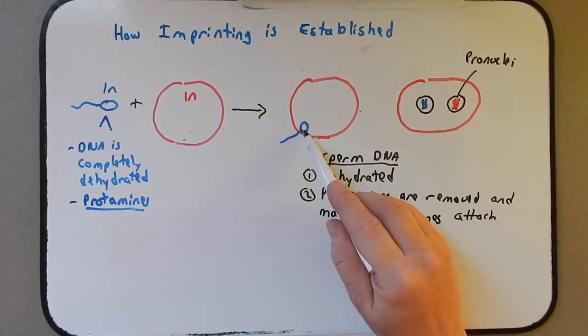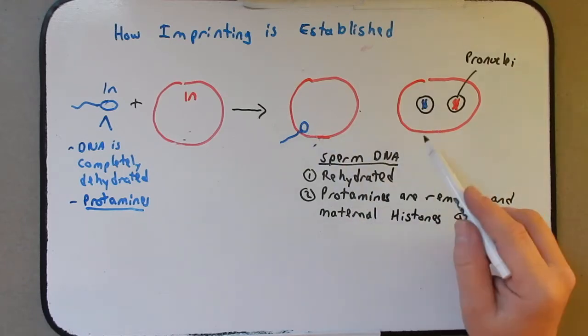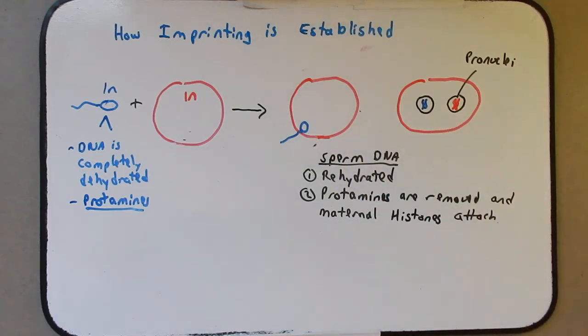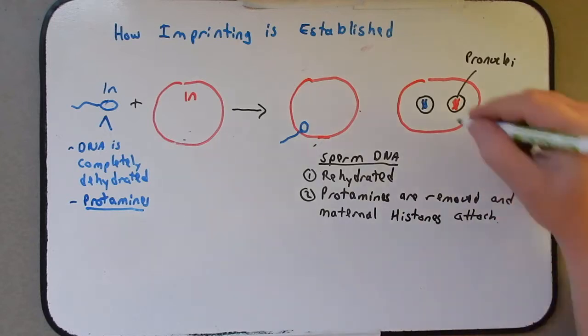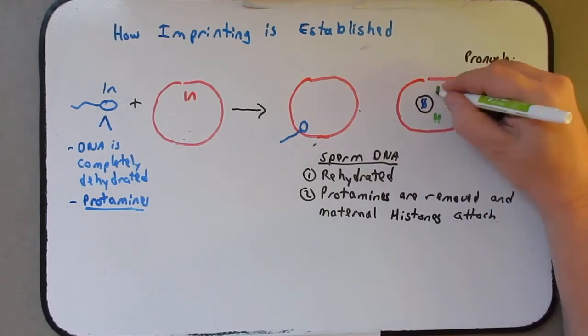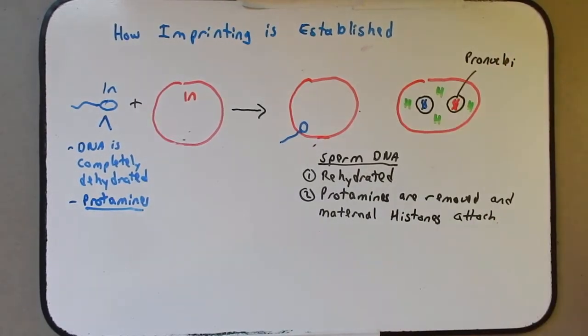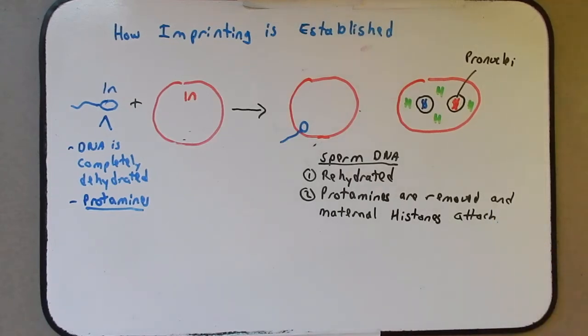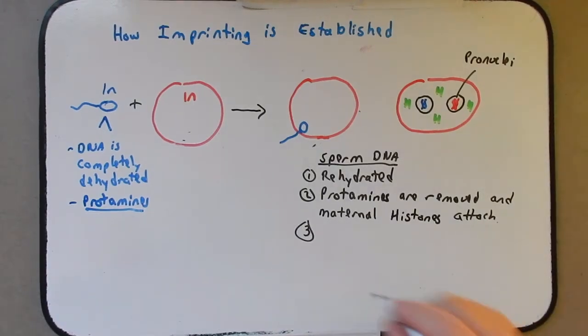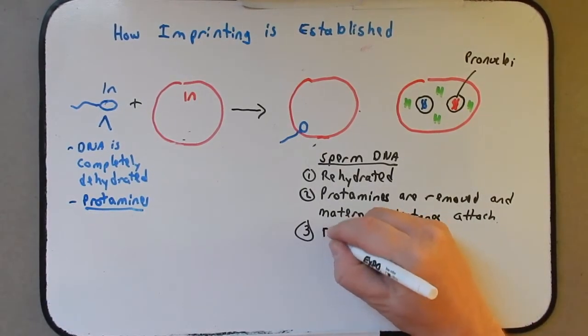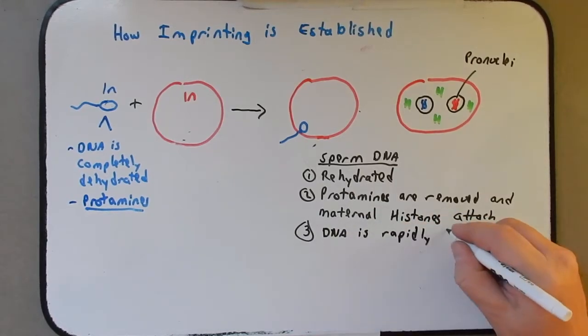The protamines are removed and maternal histones attach. So when the sperm enters here, it doesn't have any of its own histones. And so as we start to package that DNA, the histones that are present in the cytoplasm of the oocyte are incorporated into the pronuclei and begin to package the DNA. So our mom is responsible for our histones. So thank you mom. Another thing that happens is that the DNA is rapidly demethylated.